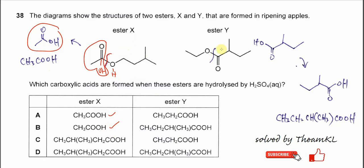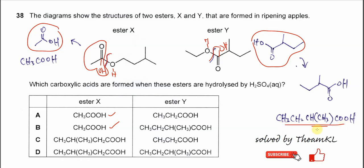For ester Y, the bond breaks again at the ester bond. This carbonyl will get OH and this O will get H, so it will form this carboxylic acid. Try to rotate and rearrange it. This carboxylic acid is CH₃, CH₂, CH(CH₃), COOH. So this is the carboxylic acid, which is B.